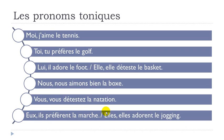And then the two last examples — first the masculine, then the feminine. For the masculine: EUX, ILS PRÉFÈRENT LA MARCHE. LA MARCHE comes from the verb MARCHER, meaning to walk. And for the feminine: ELLES, ELLES ADORENT LE JOGGING.